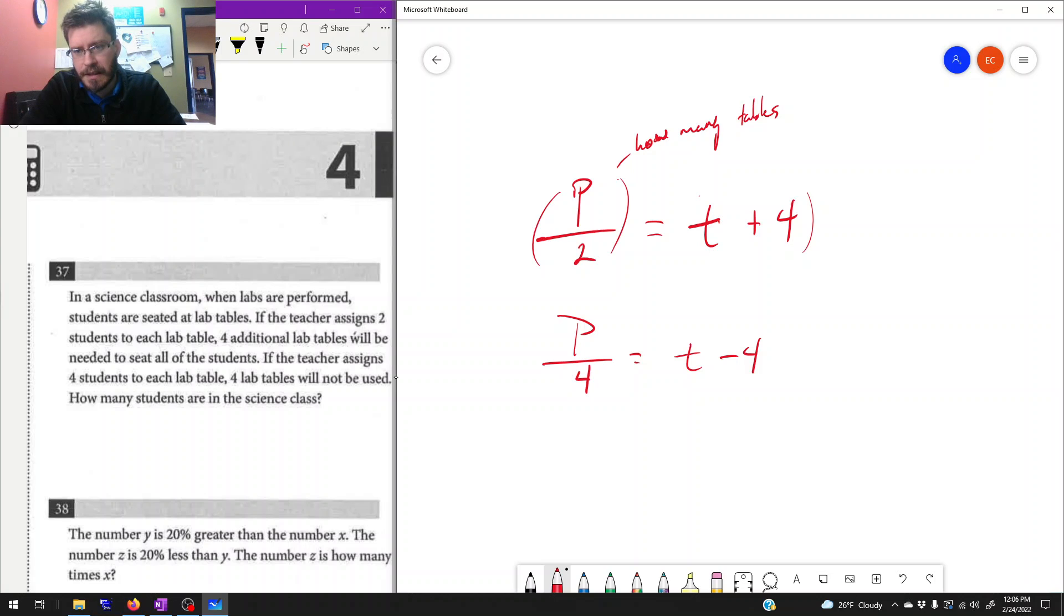And then on this side, that should be equivalent to the number of tables that we need. It's the number of tables in the room plus four is what the words here tell us. So now that we have our two equations, we can just treat it like a normal system.